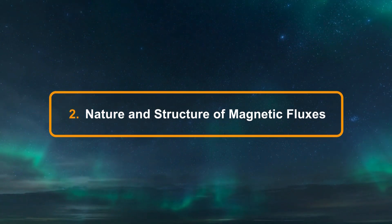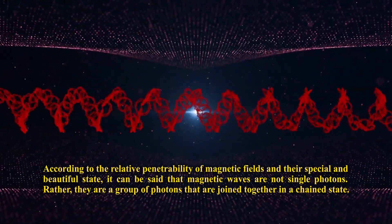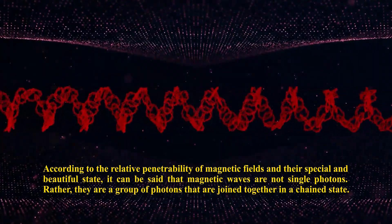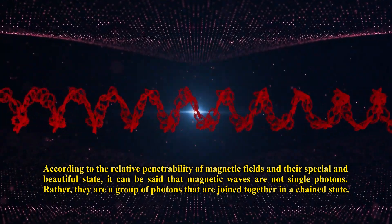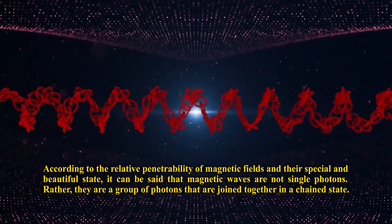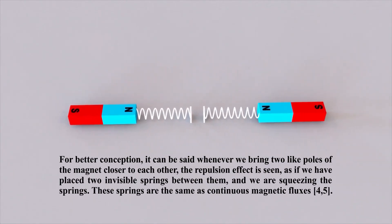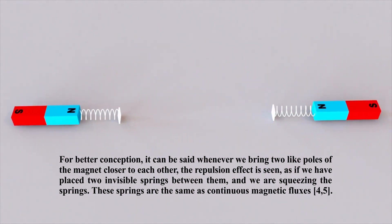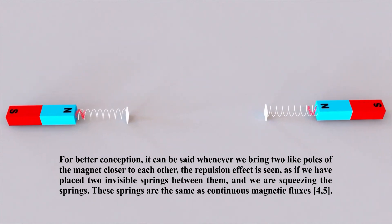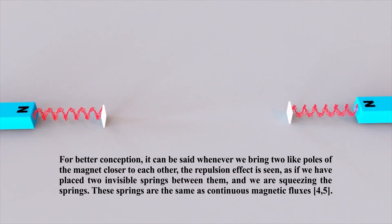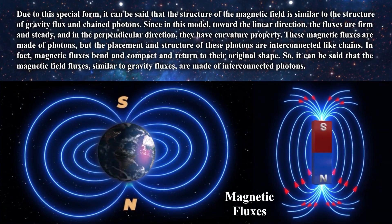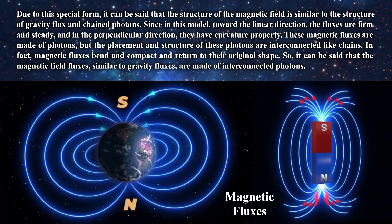Nature and the structure of magnetic fluxes: According to the relative penetrability of magnetic fields and their special state, it can be said that magnetic waves are not single photons. Rather, they are a group of photons joined together in a chained state. For better conception, whenever we bring two like poles of a magnet closer to each other, the repulsion effect is seen — as if we have placed two invisible springs between them and are squeezing the springs. These springs are the same as continuous magnetic fluxes. Due to this special form, the structure of the magnetic field is similar to the structure of gravity flux and chained photons.